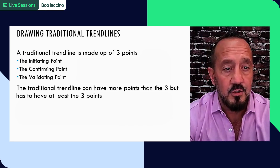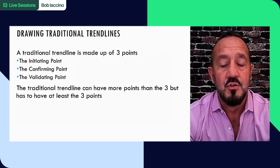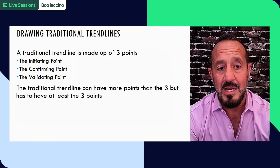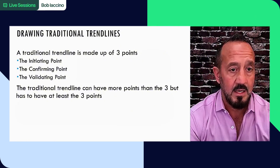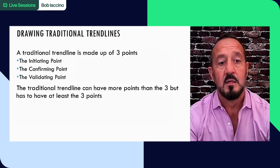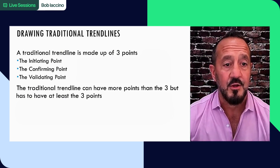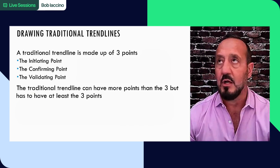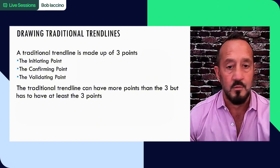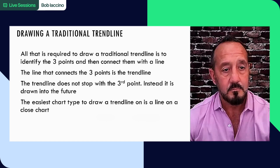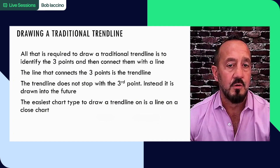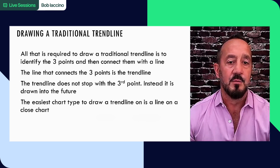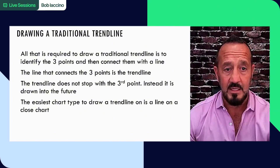Now drawing traditional trend lines - this is very important for what I'm going to show you guys next week. A traditional trend line is made up of three points: an initiating point, a confirming point, and a validating point. The traditional trend line could have more points than three, but you have to have those three to have a trend line. Otherwise you just have a couple of swing highs or a couple of swing lows. All that's required to draw a trend line is to identify the three points and then connect them with a line.